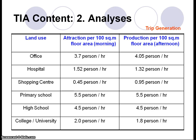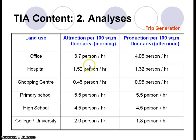Can you see the difference — 3.7% in the morning versus 4.05% in the afternoon for offices? In the morning, people arrive gradually, but in the afternoon almost everybody wants to go home at the same time. That is why trip generation is higher in the afternoon than in the morning for offices.